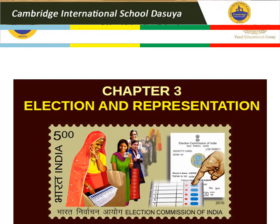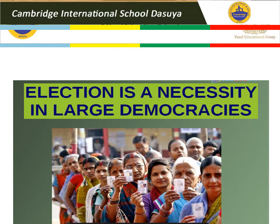Chapter 3, election and representation. We shall study the constitutional provisions regarding election and representation. We shall focus on the importance of the method of election chosen in our constitution and the implications of the constitutional provisions regarding impartial machinery for conducting elections. We will not discuss all of this today, but we will definitely cover half of it.